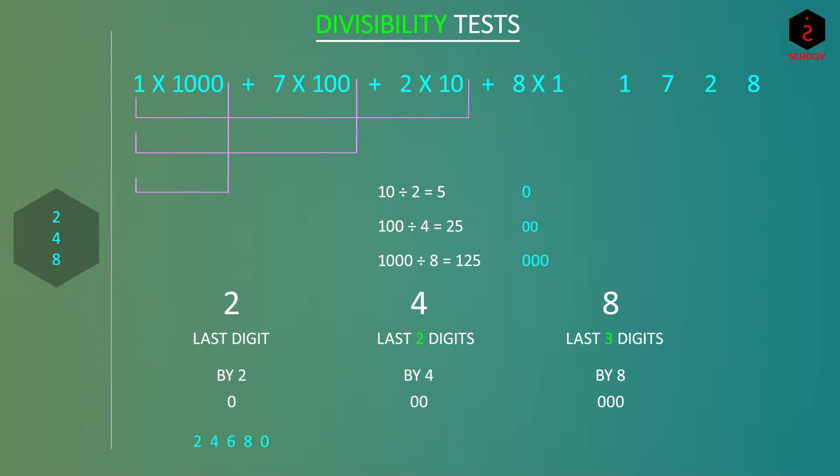Let's quickly check for 1728. The last digit 8 is divisible by 2, so 1728 is divisible by 2. The last two digits make 28, and 28 divided by 4 is 7, so divisible by 4. And the last three digits make 728, which when divided by 8 gives 91, so the number is divisible by 8 too. Now you see the reason why we have grouped these numbers together.